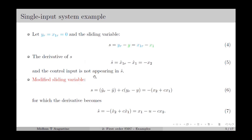Therefore, we modify the sliding variable as in equation number 6, where we include the derivative of the output error as well. This gives the sliding variable as minus x2 plus cx1. For which the derivative s-dot is equal to minus x2-dot plus cx1-dot, which equals x1 minus u minus cx2, obtained by substituting the state equation. Here we can observe that the control input u is appearing in the derivative of the sliding variable, so we can use first order sliding mode control with this sliding variable.